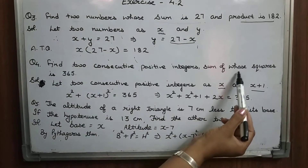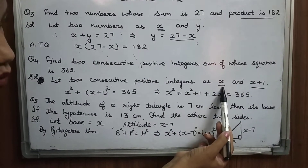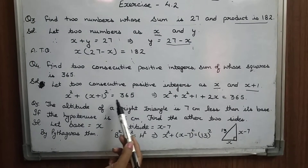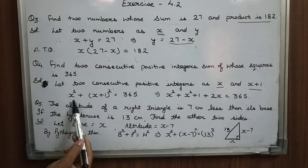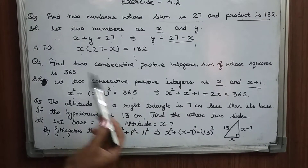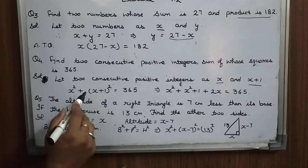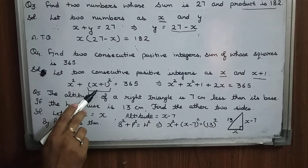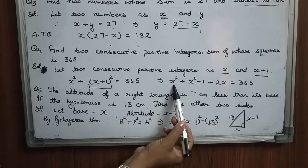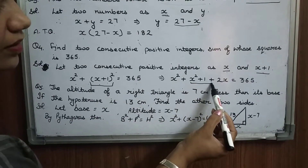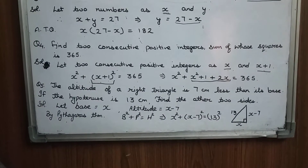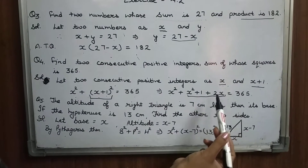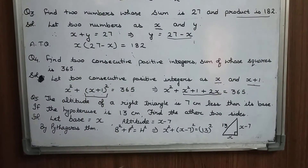The sum of squares of x and x plus 1 should be equal to 365. So I have written: x² plus (x+1)² equal to 365. We solve the whole square by the identity a² plus b² plus 2ab. So (x+1)² equals x² plus 1 plus 2x. You can add these terms and bring them to one side to get a quadratic equation, which you can solve by the factorization method.